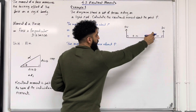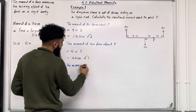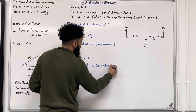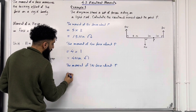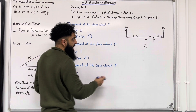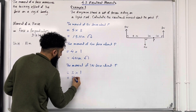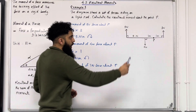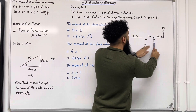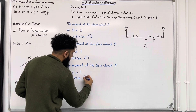The final force, the 3 newton force: the moment of the 3 newton force about P equals 3 newtons multiplied by the perpendicular distance from P, which is 1. So 3 times 1 is 3 Newton meters. If I hold on to point P and apply this 3 newton force, it will take the entire body anti-clockwise. So we have 3 Newton meters going anti-clockwise.